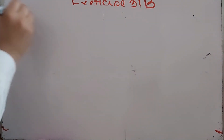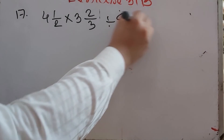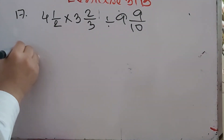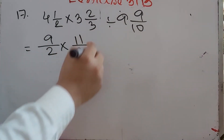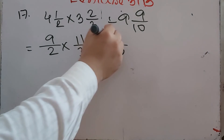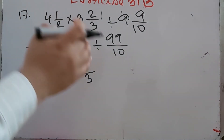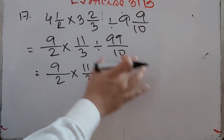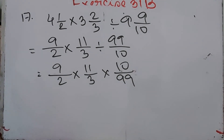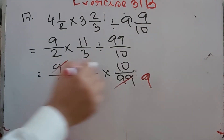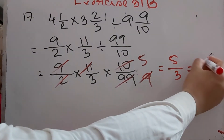Number 17: 4 whole 1/2 multiplied by 3 whole 2/3 divided by 9 whole 9/10. Convert: 2×4 = 8 plus 1 = 9/2; 3×3 = 9 plus 2 = 11/3; 10×9 = 90 plus 9 = 99/10. Multiply 9/2 × 11/3 × 10/99. Divide 99 by 11 = 9, divide 9 by 9 = 1, divide 10 by 2 = 5. Answer is 5/3 = 1 whole 2/3.